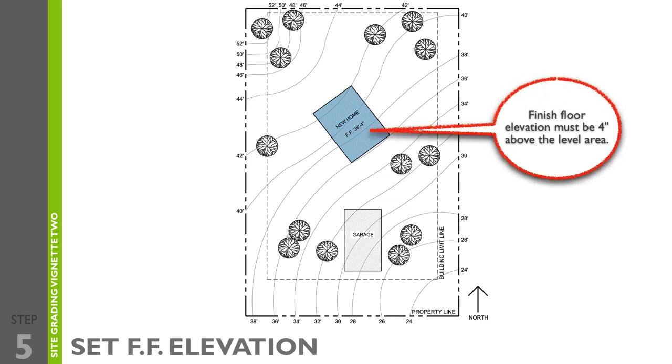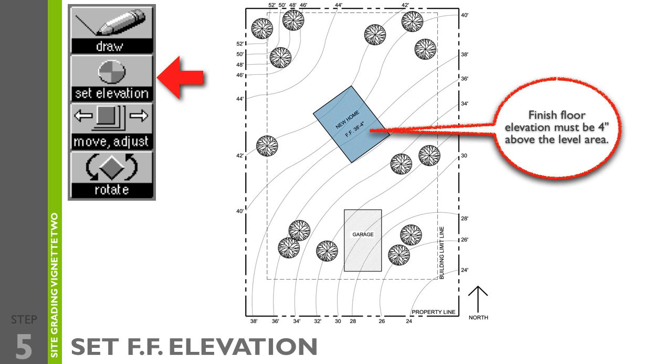Here, since we've chosen contour line number 38, we've set the finished floor elevation 4 inches above it at 38 feet 4 inches. Using the set elevation tool, you can manually input these numbers. However, make sure you type in the full 38 feet 4 inches, because if you only type in 4 inches, your finished floor elevation would only be 4 inches above sea level.